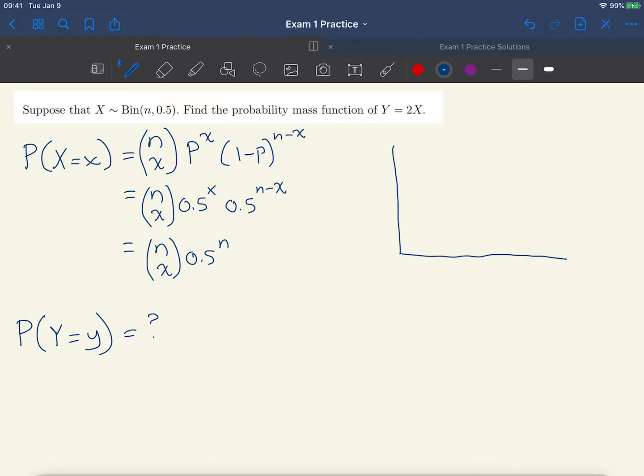The support of a binomial random variable is 0 all the way up to n. Let's sketch in here what a distribution might look like. Here are some possible values for the PMF of X.